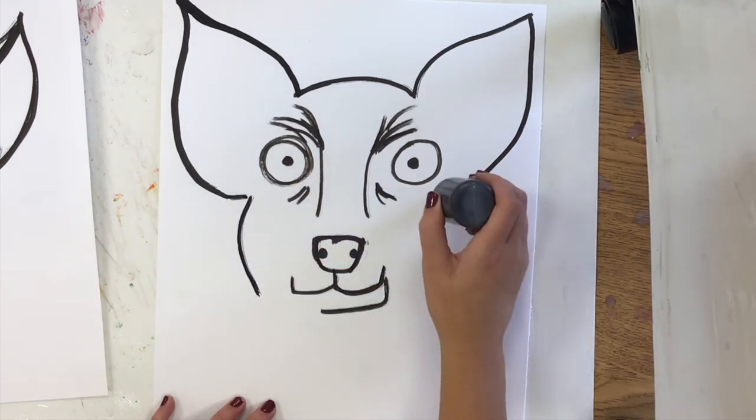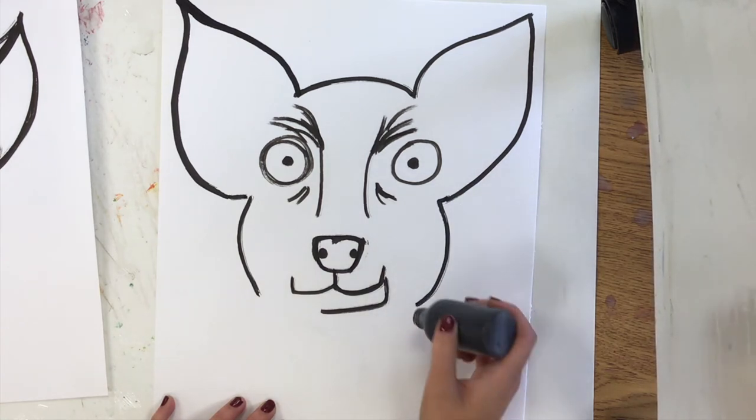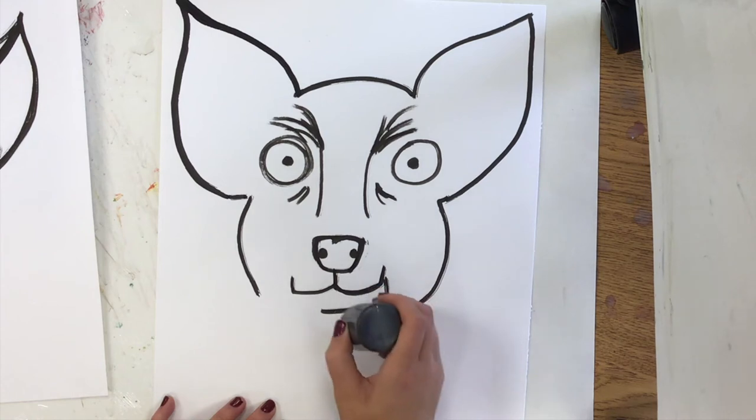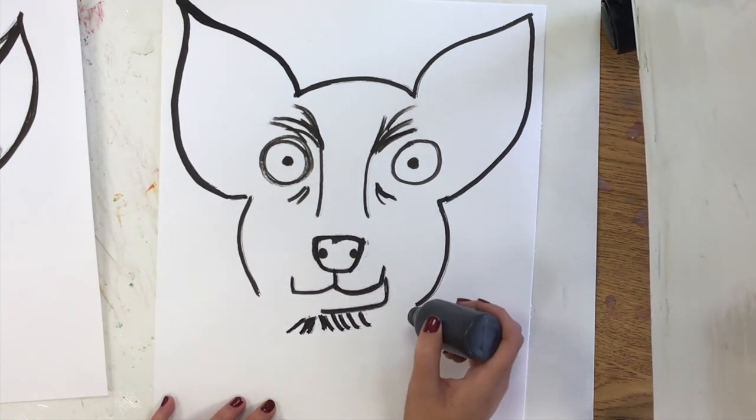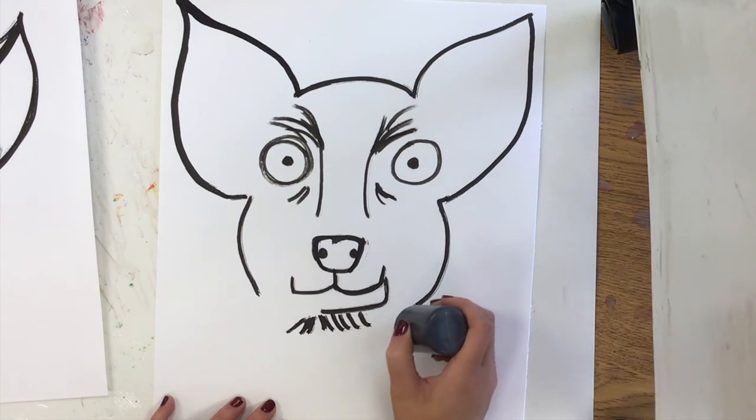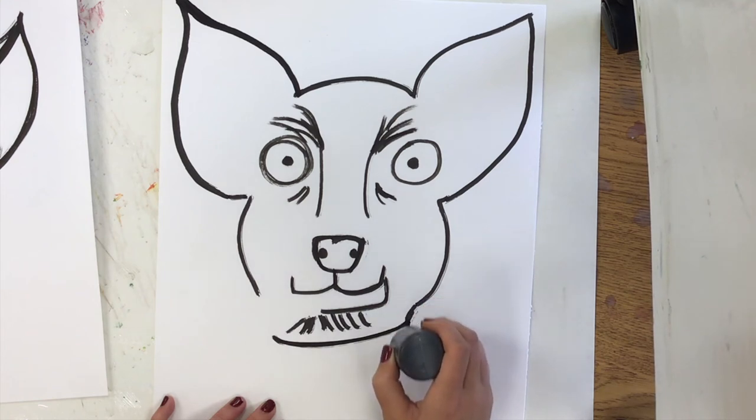And then I'm going to start to draw some texture for my chihuahua's neck. And then I might even draw a collar, which is just a rounded U-shape. I'm going to draw a collar here. Connect that line.